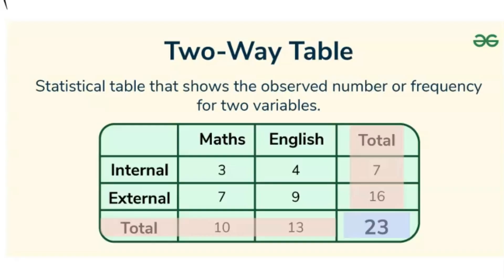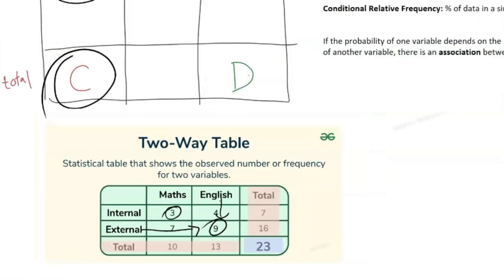And if we look in our two-way table with actual variables, that's something like math internal. So that would be 3 over 23. Or maybe we want to look at external English. So we look down English, external, so that's 9 over 23.